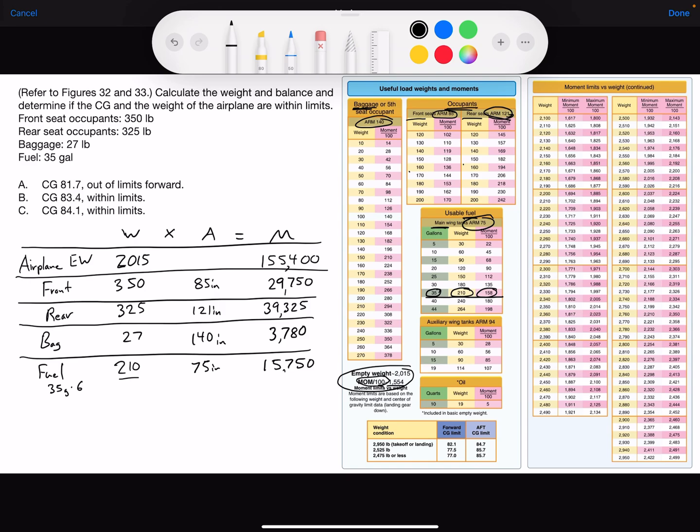Now, what we need to do is total the weight and the moment. Put totals down here. And the total weight is 2,927. The total moment is 244,005.